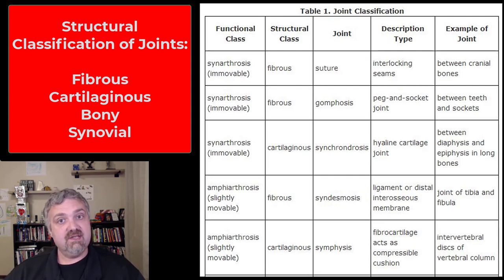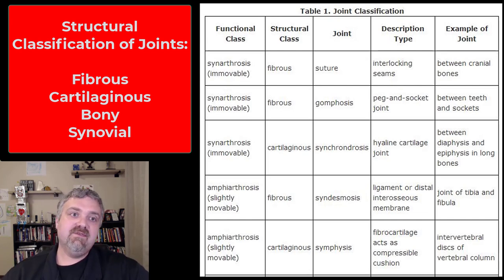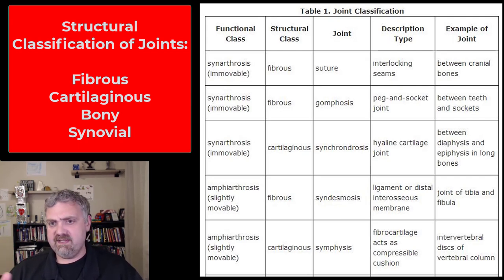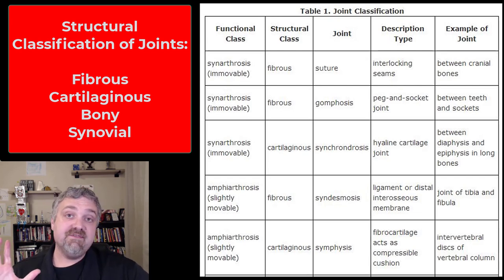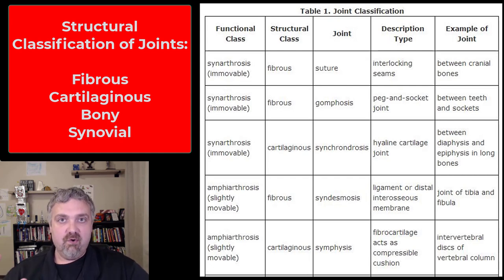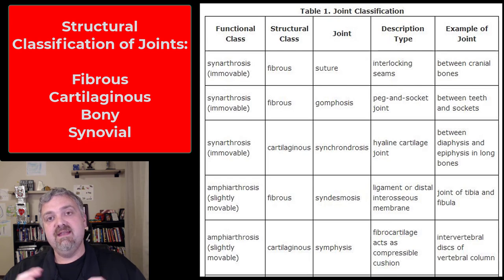Now we're going to look at the structural classifications of joints, and we're going to see three, but there are really four. We have fibrous joints, which are held together by fibrous connective tissue; cartilaginous joints, held together by cartilage; bony joints — I'll show you an example of a synostosis, which is a joint connected by bone; and then synovial joints, which are our diarthroses, or freely movable joints, held together by joint cavities.